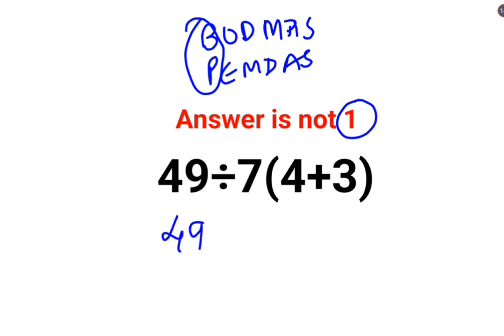We will keep the rest of the question as it is. There is no sign between the 7 and the bracket, which means the sign is supposed to be multiplication. And we have 4 plus 3, which is 7.